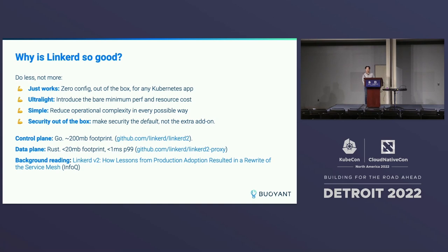The main focuses behind Linkerd are that it's supposed to be very lightweight, both in terms of resource usage — it doesn't take up a lot of memory and doesn't add a lot of latency — but also lightweight conceptually, in that it's a very simple model that you don't have to think too much about and can operate without getting bogged down in the details. Being simple and secure right out of the box has been a guiding principle for the project. The control plane is written in Go and Rust, and the data plane is a custom-built proxy written in Rust, built to be ultralight.